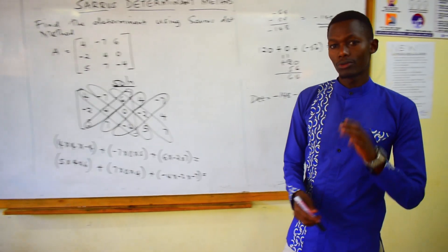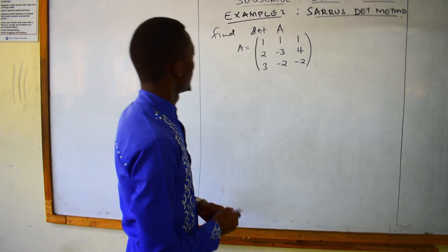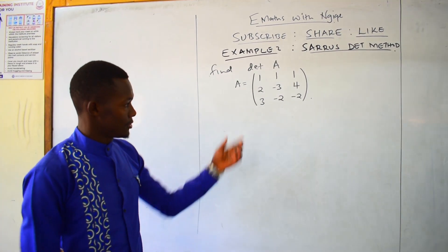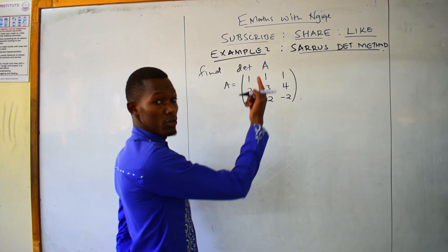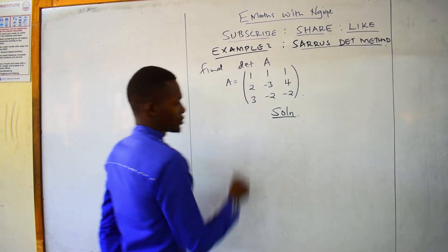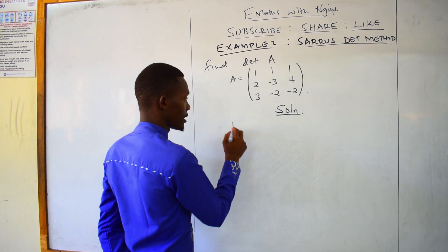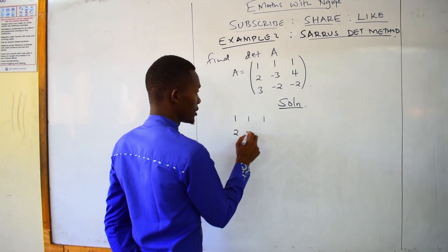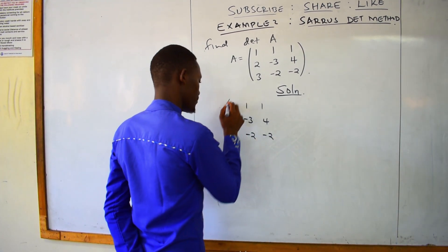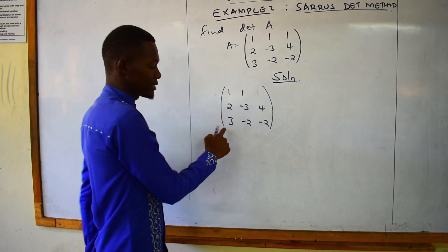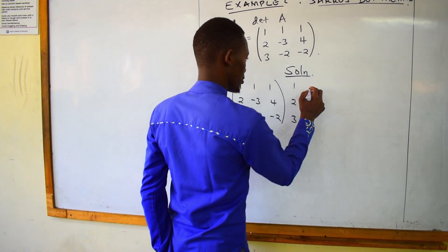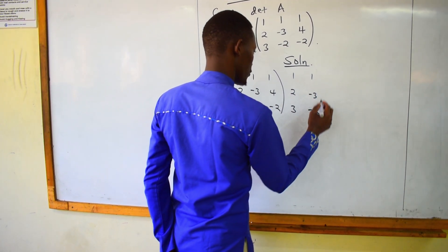Let's take example number 2. Find the determinant of matrix A, given matrix A as: 1, 1, 1, 2, negative 3, 4, 3, negative 2, negative 2. Using the Sarrus method, you rewrite the first and second columns outside the matrix: 1, 2, 3, then 1, negative 3, negative 2.